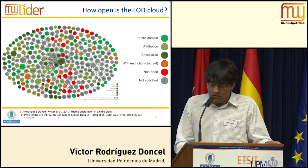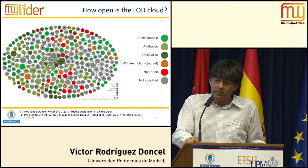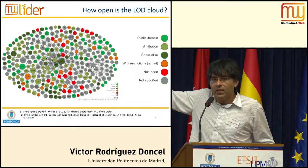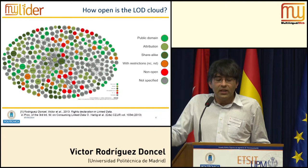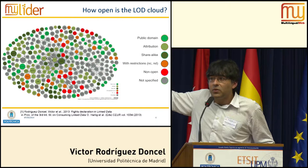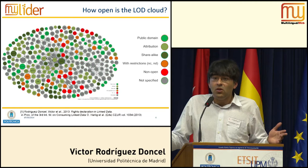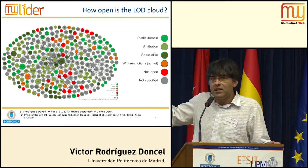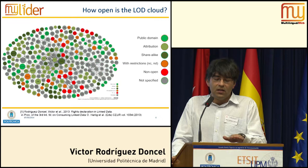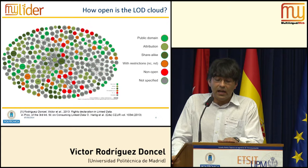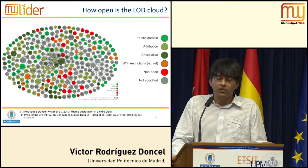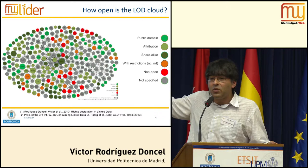Currently, the state of affairs is not very good regarding licensing. This image shows the linked open data cloud as it was about a year ago, where you can see different resources colored according to the license with which they have been exposed. There are many resources published in the public domain, meaning you can do whatever you like with them. Some others are published with restrictions — as simple as attributing authorship, or as hard as prohibiting commercial use.